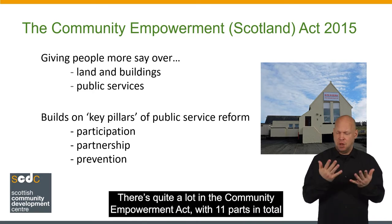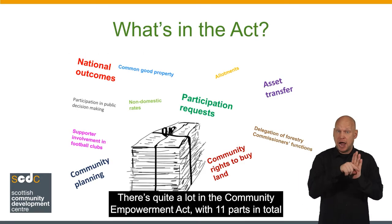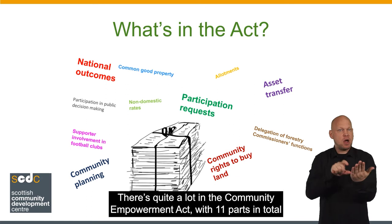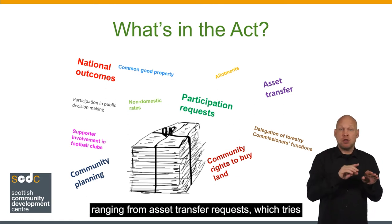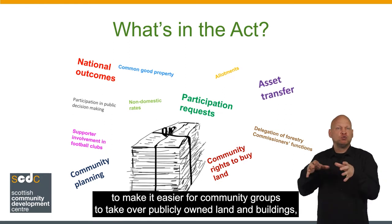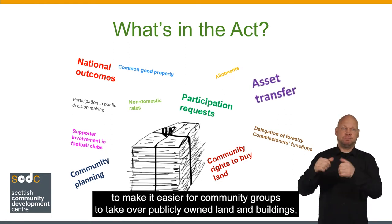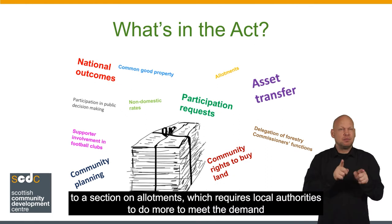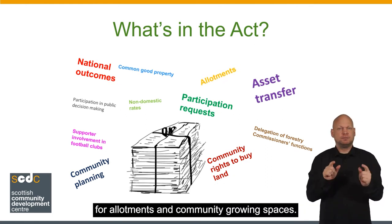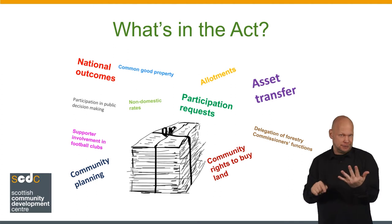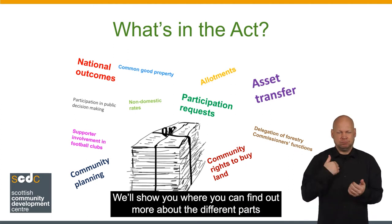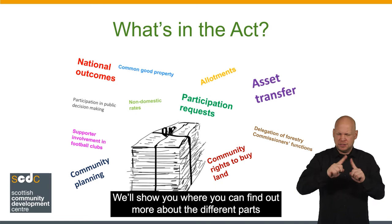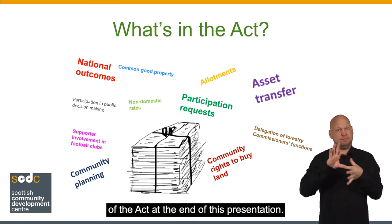There's quite a lot in the Community Empowerment Act with 11 parts in total, ranging from asset transfer requests — which tries to make it easier for community groups to take over publicly owned land and buildings — to a section on allotments, which requires local authorities to do more to meet the demand for allotments and community growing spaces. We'll show you where you can find out more about the different parts of the Act at the end of this presentation.